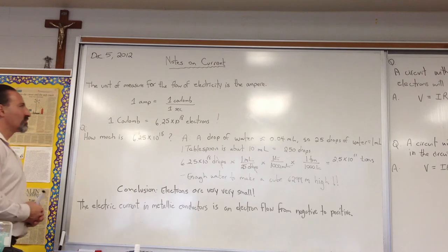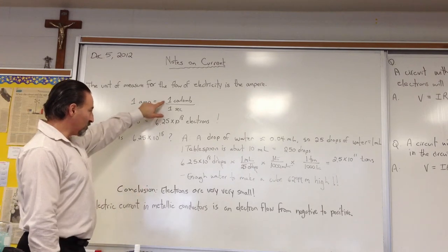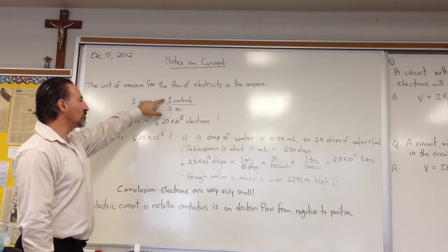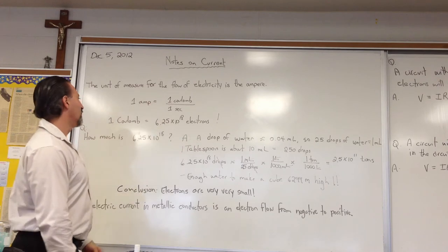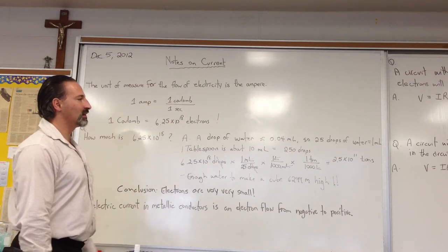And the unit of measure for the flow of electricity is the ampere. And we use two units to describe the ampere. It's a unit that's described by a flow of electrons of one coulomb per second. And one coulomb is equal to 6.25 times 10 to the 18 electrons.